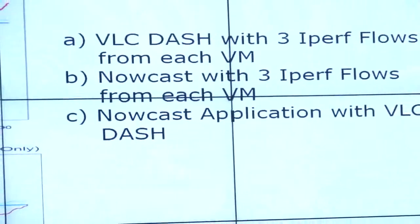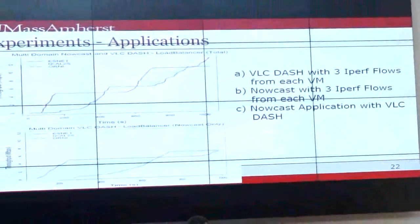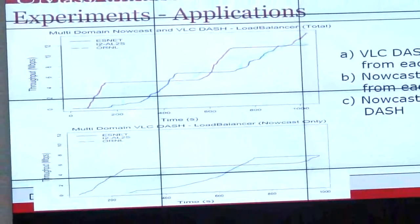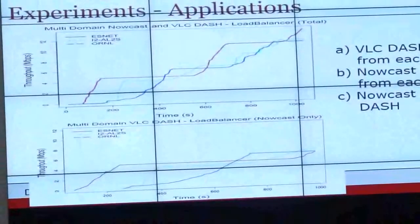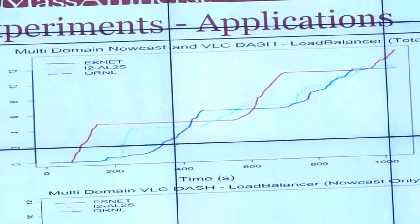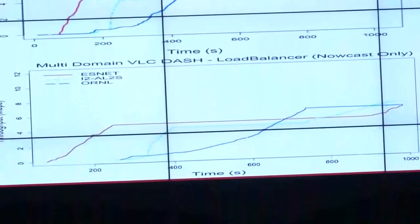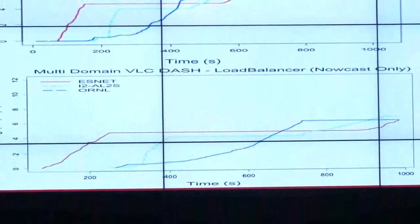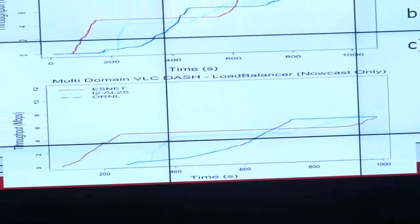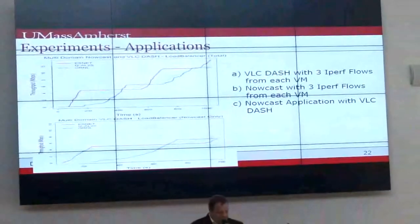Let me finish by showing an experiment where we ran video traffic alongside this. The top graph shows video traffic and outcast traffic combined, load-balanced over the different SDN domains. The bottom graph shows how the traffic nicely load-balances across all three networks to maximize overall throughput from the three SDN domains. Just a small example of how we can run experiments and do measurements in this case.